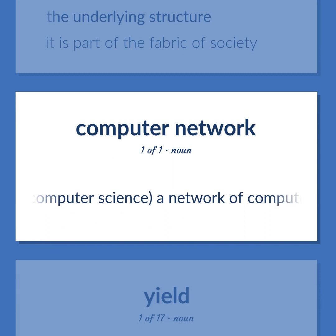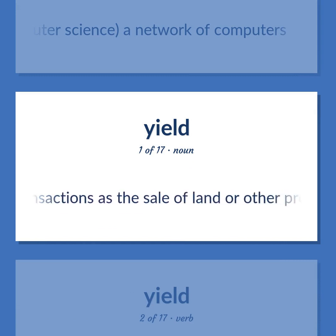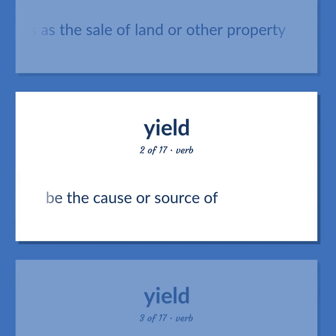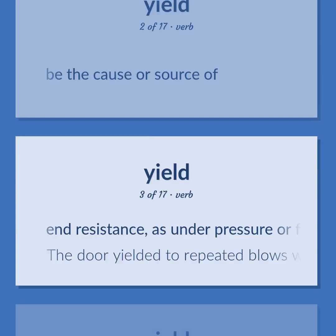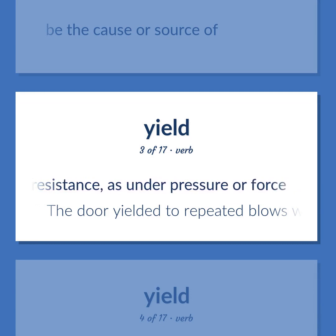Computer science: a network of computers. The income or profit arising from such transactions as the sale of land or other property. Be the cause or source of. End resistance, as under pressure or force. The door yielded to repeated blows with a battering ram.